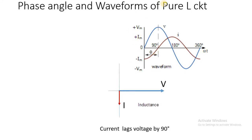When the voltage is at the reference position — when the voltage waveform starts its positive half cycle at omega t equal to 0 — we represent the voltage phasor at the reference axis, at the positive x-axis. With respect to that voltage as reference, the current phasor is taken 90 degrees clockwise, because we want 90 degrees negative. By taking 90 degrees clockwise, the current is in the lagging position — the current lags voltage by 90 degrees.